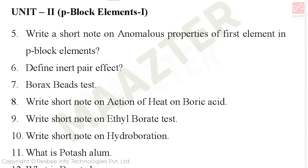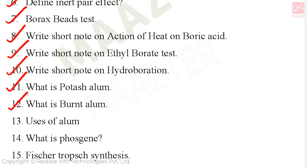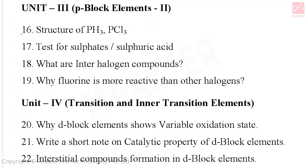Unit 2: P Block Elements 1. Important questions: write a short note on anomalous properties of the first element in p block elements, define inert pair effect, borax bead test, write a short note on action of heat on boric acid, ethyl borate test, hydroboration, what is potash alum, what is burnt alum, uses of alum, what is Friesgen, and Friedel-Crafts synthesis. This second unit is very important for 2-mark and 3-mark questions.